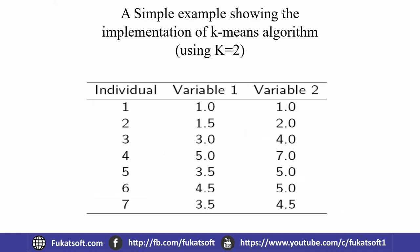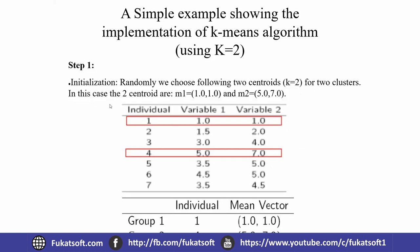A simple example showing the implementation of the k-means algorithm using k equal to 2. Step 1 is initialization, where we randomly select initial centroids from the dataset.